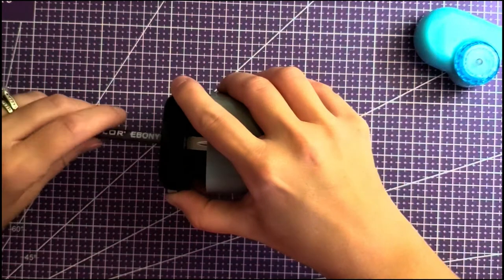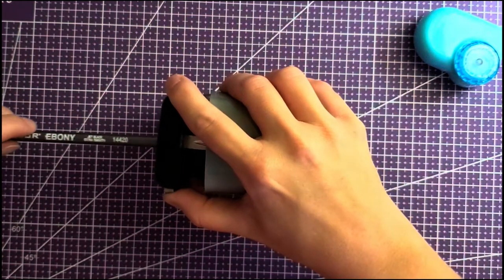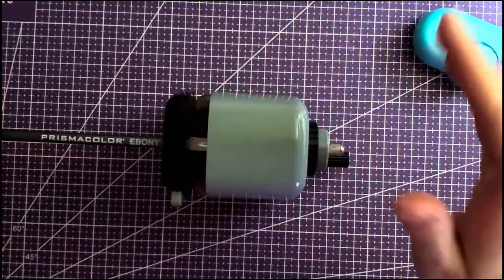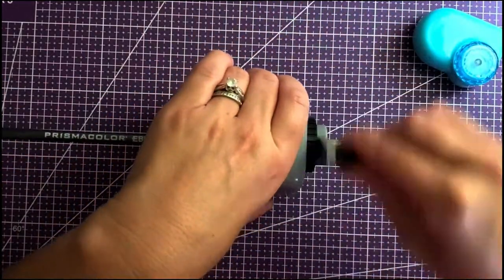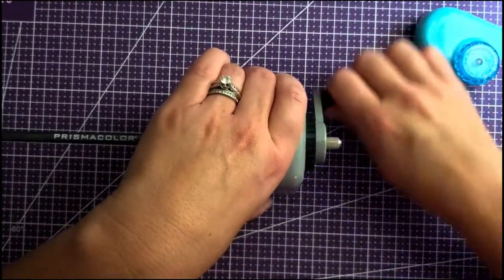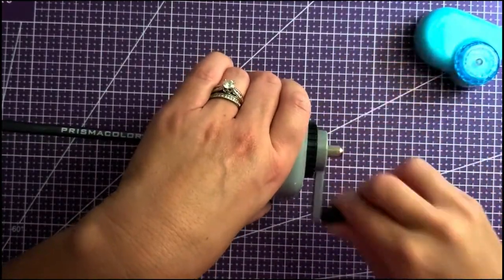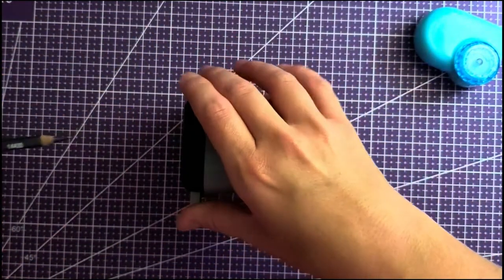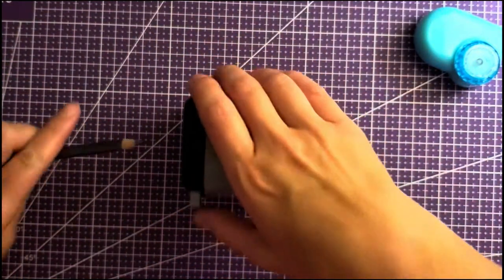So you pull it out while holding the button, stick your pencil in, let go, sharpen until you stop hearing the grinding. This could take a minute, this is a fresh pencil. We need a little bit more on this one.